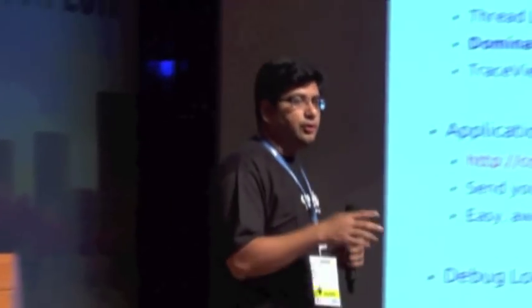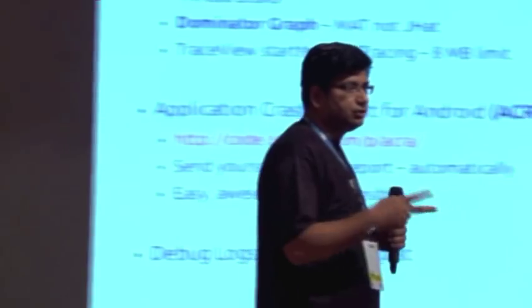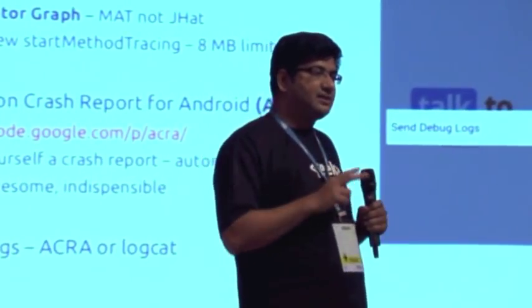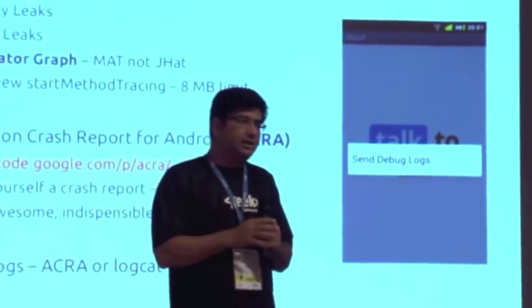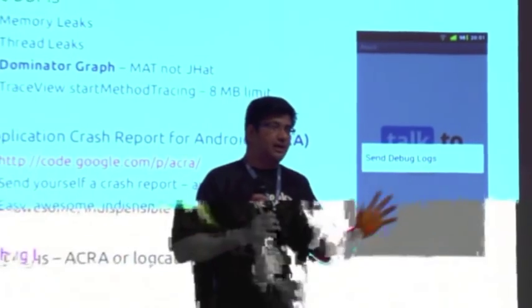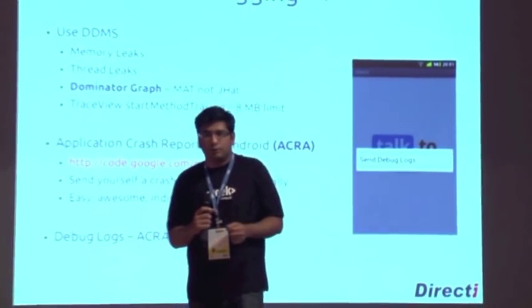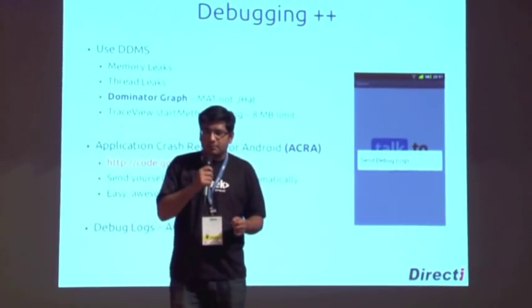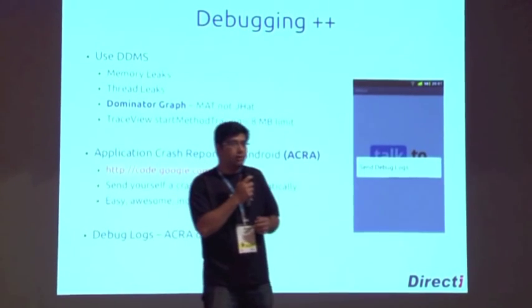Another thing I noticed is that often when you start using TraceView you don't realize that it has two API signatures. One is startMethodTracing with a file name parameter — that is the file name you want TraceView to dump profiling data into.